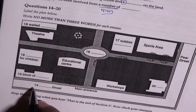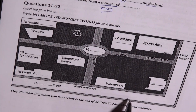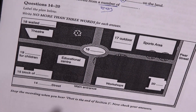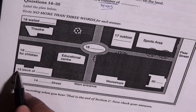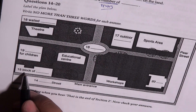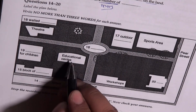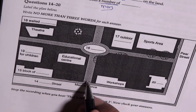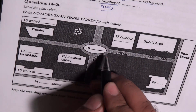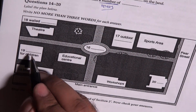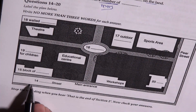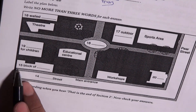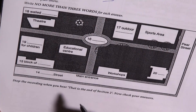For questions 14 to 20, the most important thing is knowing where the first question is. Question 14 is the name of the street. After that you follow the audio. Question 15 is a block of something after the main entrance, then they take you to 16, 17, 18, and 19. For the map, you must know the arrangement of questions carefully. You also need to be familiar with prepositions of place and location.